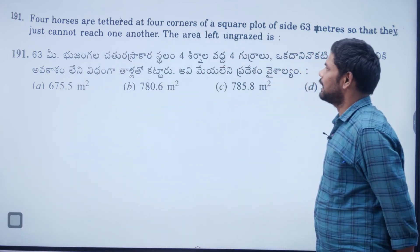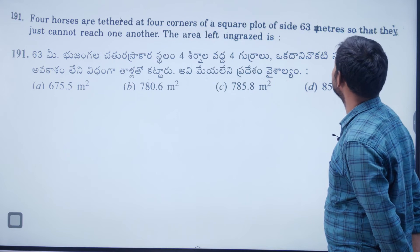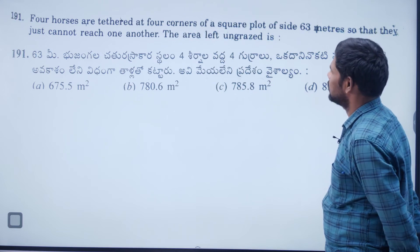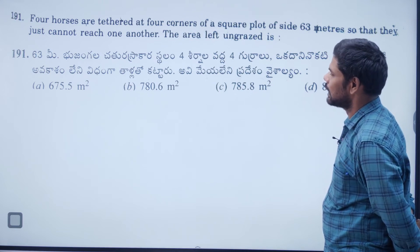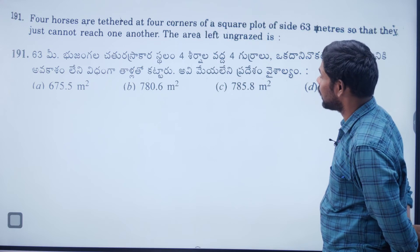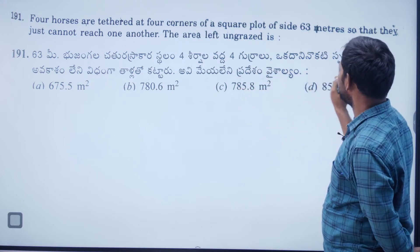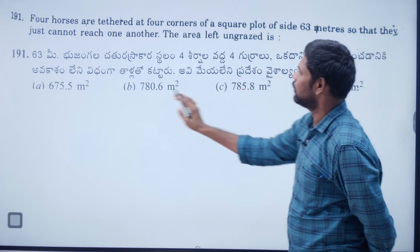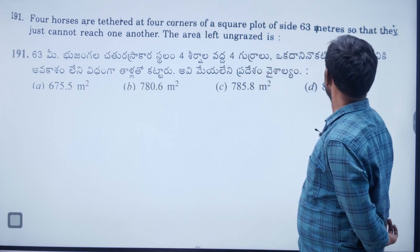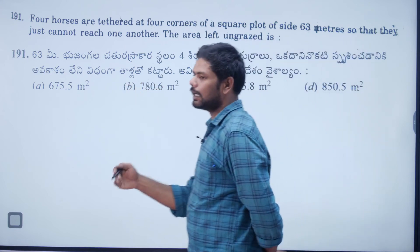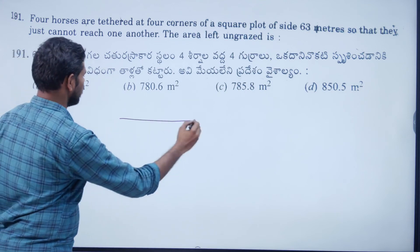Four horses are tethered at four corners of a square plot of side 63 metres. Each horse is tethered with a rope such that they cannot go beyond the square.